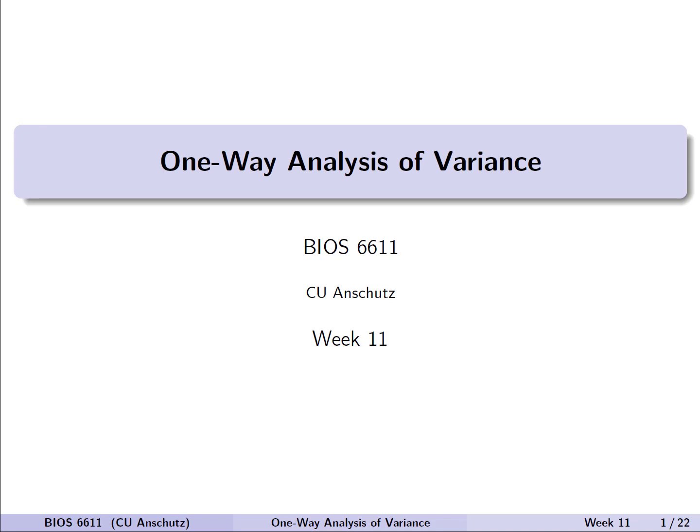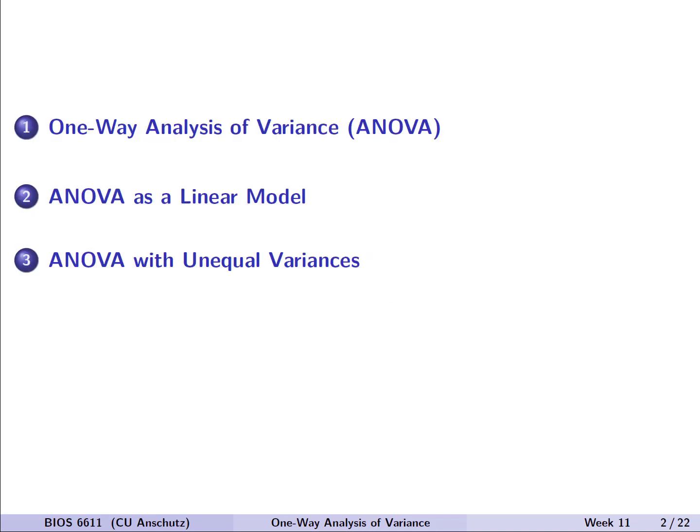In this lecture, we will talk about the one-way analysis of variance. We'll first introduce the concept in a motivating data example, make some connections to the linear regression models we've been working with previously, and then discuss an extension to a case where the assumption of equal variances may be violated.